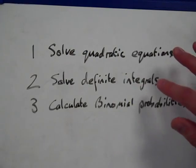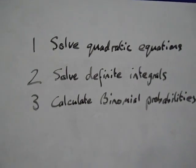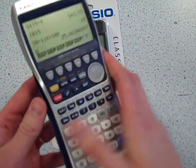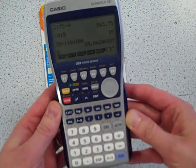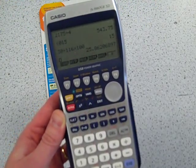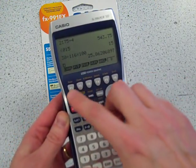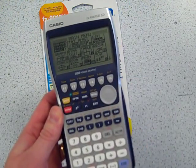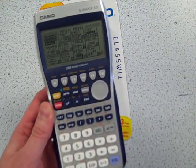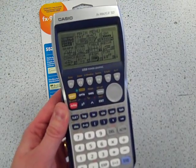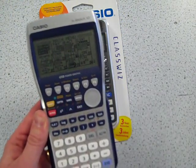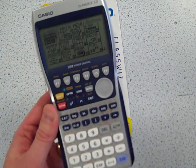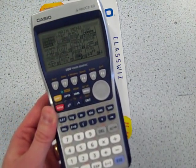A few calculators do the first two of these things at the moment. Not many do all three. I have this one, I love this calculator, the FX9860G2. This will do all three of those things, everything you need for the new A-Level starting in September 2017. However, it will be about 70, 80 quid to buy, which I think is really out of the price range for most of our students.